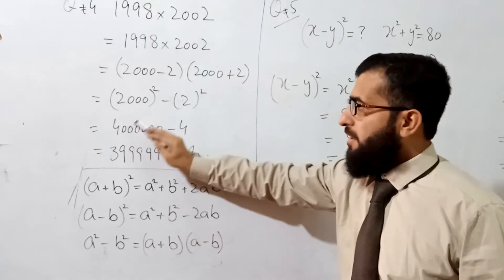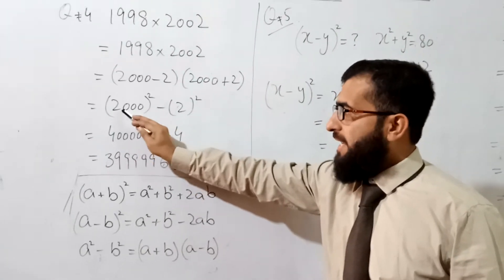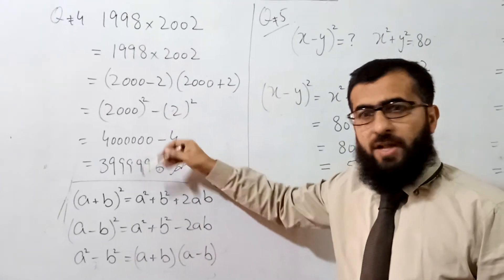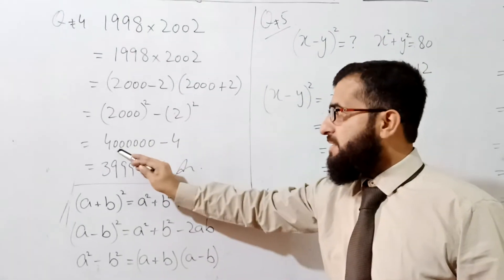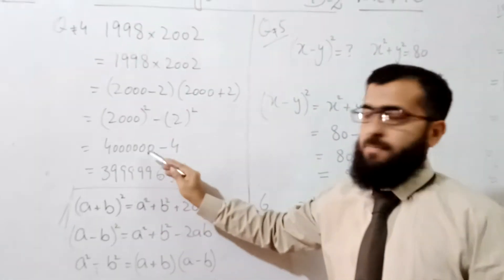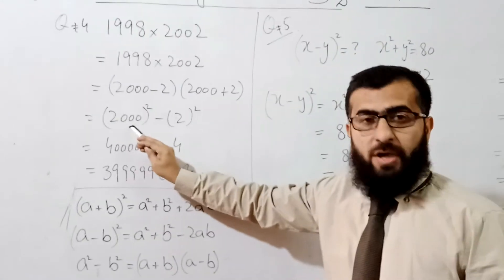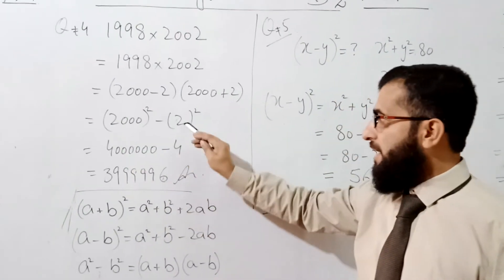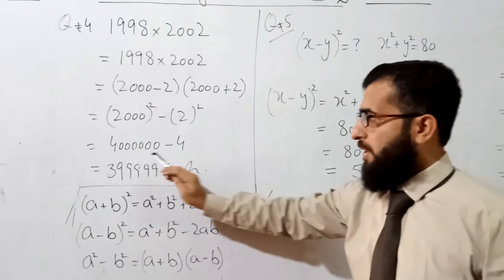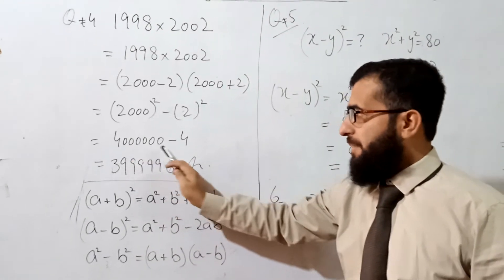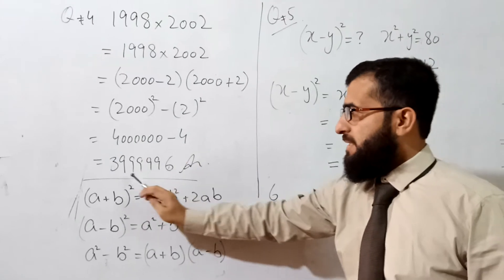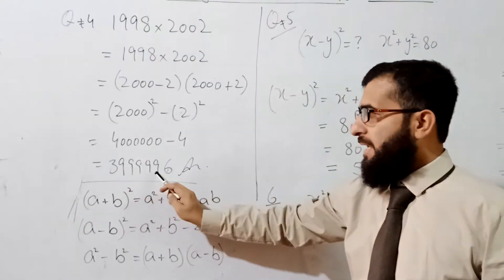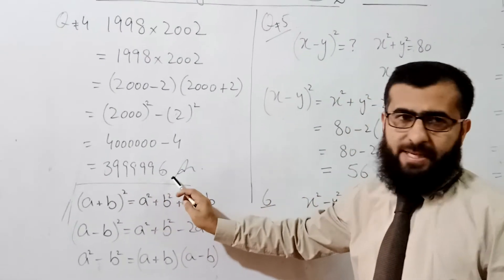So 2000² gives 4 with 6 zeros, which is 4,000,000. Then subtract 2², which is 4. The answer is 4,000,000 − 4 = 3,999,996.